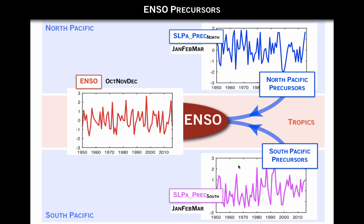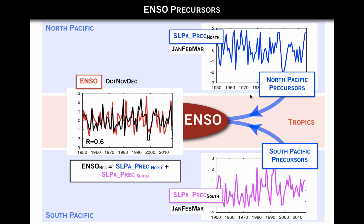So we can go back to our diagram and try to reconstruct the ENSO time series with these two precursors by applying a very simple linear model where the ENSO reconstruction is just equal to the north precursor plus the southern precursor index, weighted equally — 50% each. And if you do that, you can see that you reconstruct a good amount of variance. The correlation is 0.6, so that's pretty good.